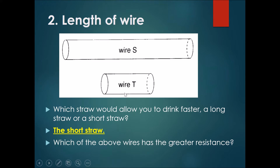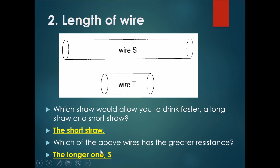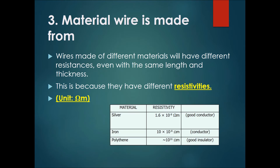So which of the wires has a greater resistance? Using the same concept, wire S would have the higher resistance and wire T would have the lower resistance. The longer the wire, the greater the resistance.